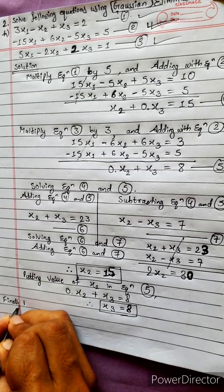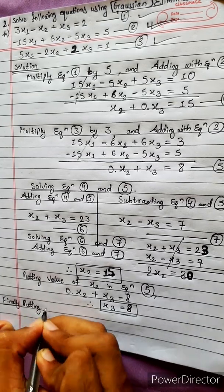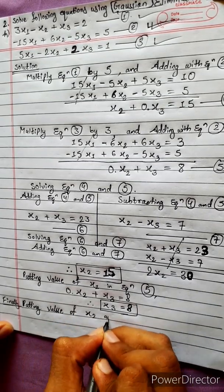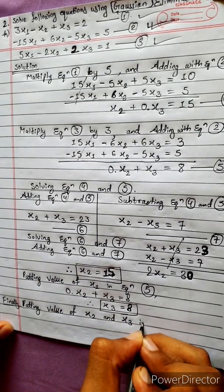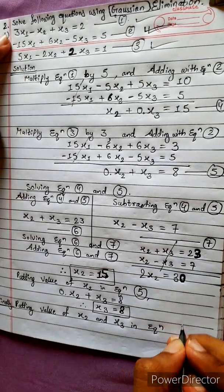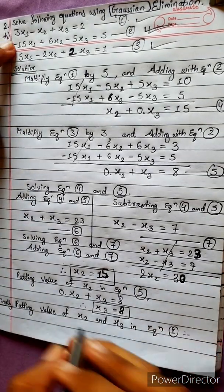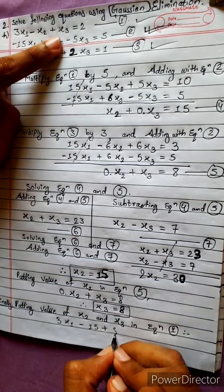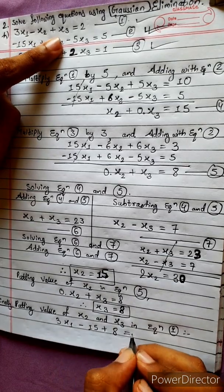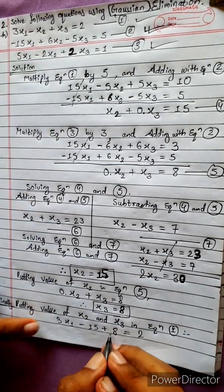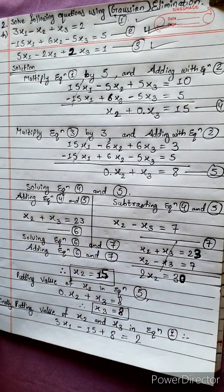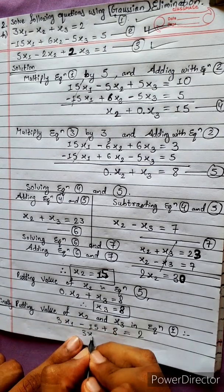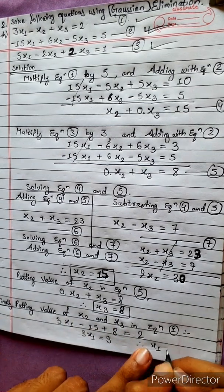Finally, putting the values of x2 and x3 into equation 1: 3 times x1 minus x2 (15) plus x3 (8) equals 2. This becomes minus 15 plus 8, which is minus 7. So 3x1 minus 7 equals 2, giving 3x1 equals 9, therefore x1 equals 3.